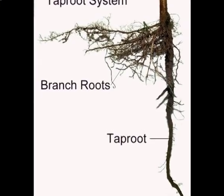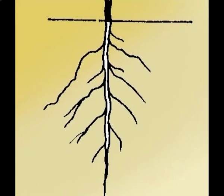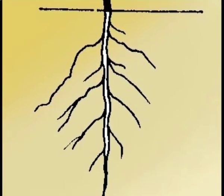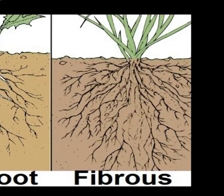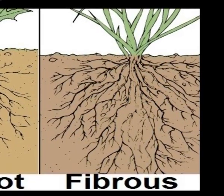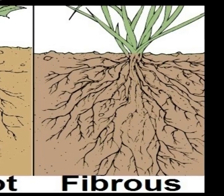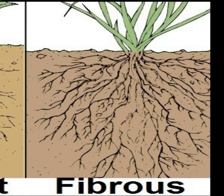Roots are of two types: taproot and adventitious root. Taproot develops from the radical and is made up of one main branch and other sub-branches; the primary root and its branches constitute the taproot system, e.g., dicot roots. In some plants, after some time the taproot stops growing and roots develop from other parts of the plant, which are branched, unbranched, fibrous, or storage — known as adventitious roots constituting the fibrous root system, e.g., monocot roots.